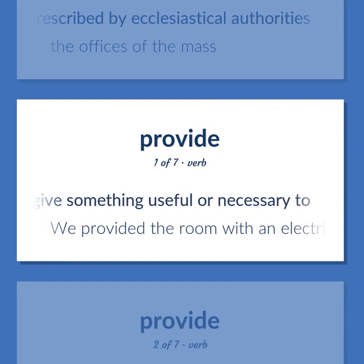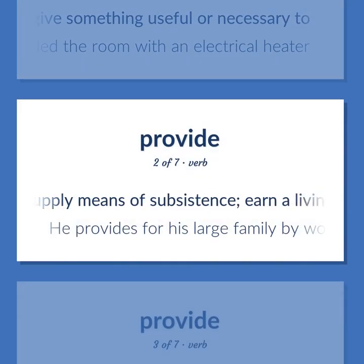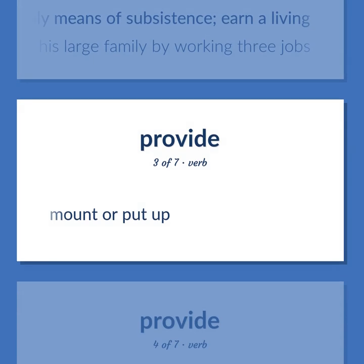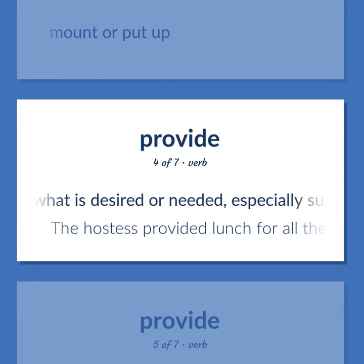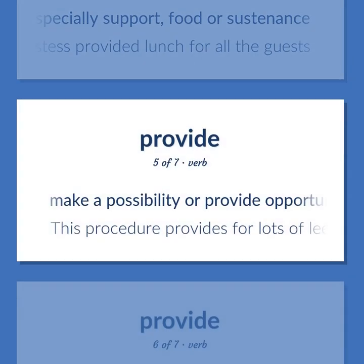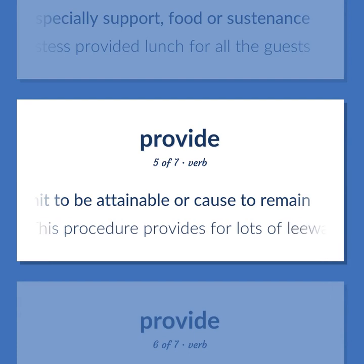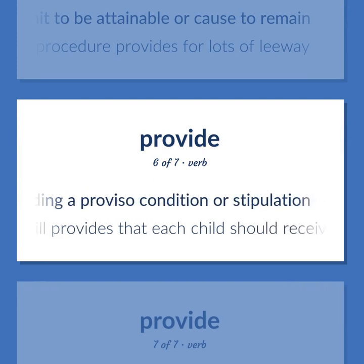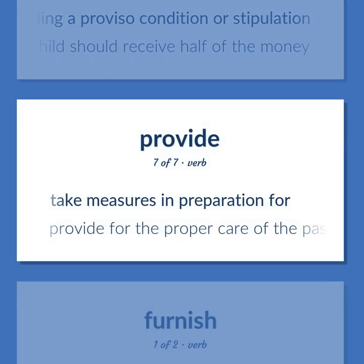Provide: give something useful or necessary to. Example: We provided the room with an electrical heater. Supply means of subsistence; earn a living. Example: He provides for his large family by working three jobs. Mount or put up. Give what is desired or needed, especially support, food, or sustenance. Example: The hostess provided lunch for all the guests. Make a possibility or provide opportunity for; permit to be attainable or cause to remain. Example: This procedure provides for lots of leeway. Determine what is to happen in certain contingencies, especially by including a proviso, condition, or stipulation. Example: The will provides that each child should receive half of the money. Take measures in preparation for. Example: Provide for the proper care of the passengers on the cruise ship.